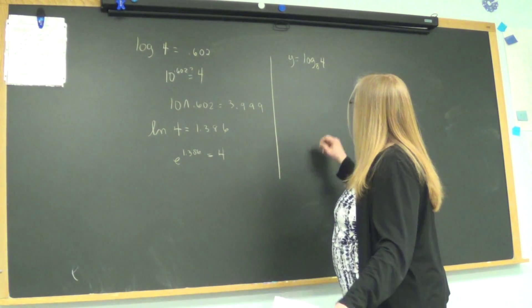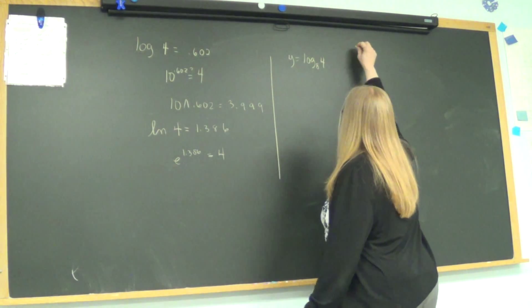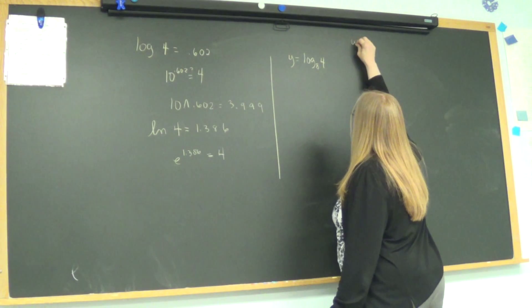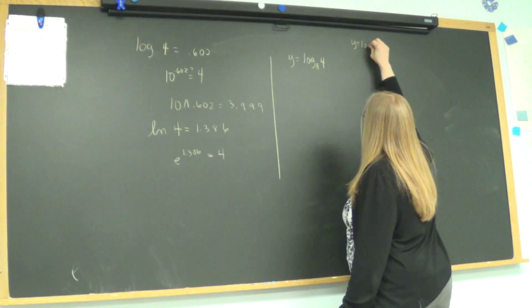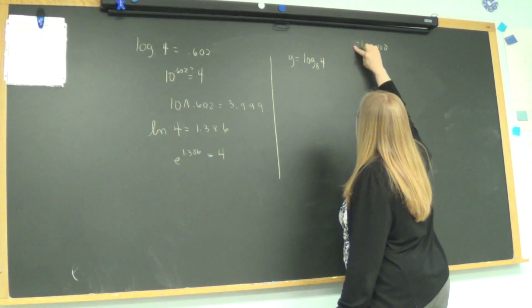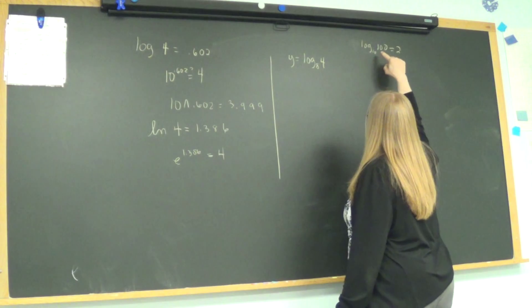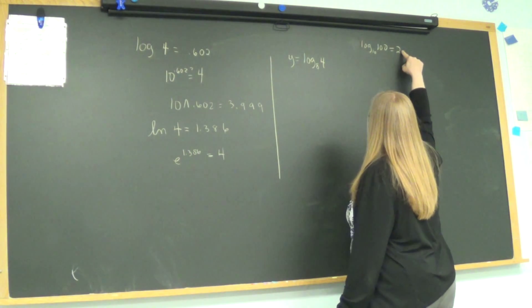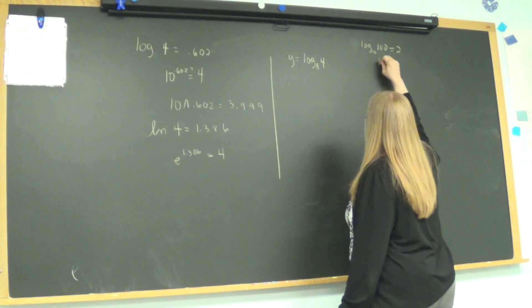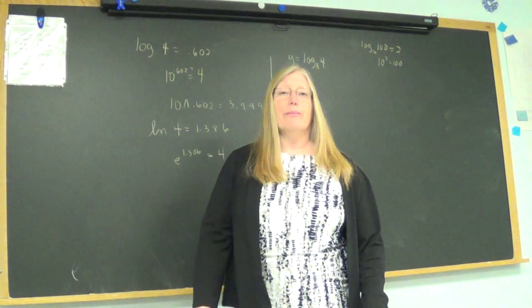So let's first of all rewrite this in exponential form. Remember we have Y equals log to the base 10 of 100 is 2. So I'll put the 2 on this side. Can be rewritten as 10 raised to the 2 equals 100. That was what we were practicing the very first day that we learned logarithms.